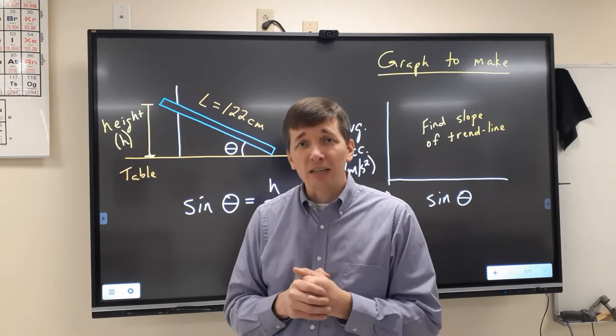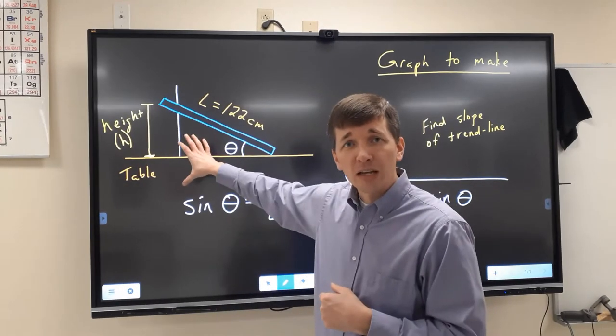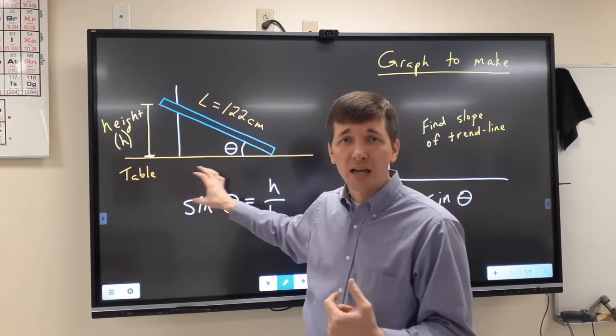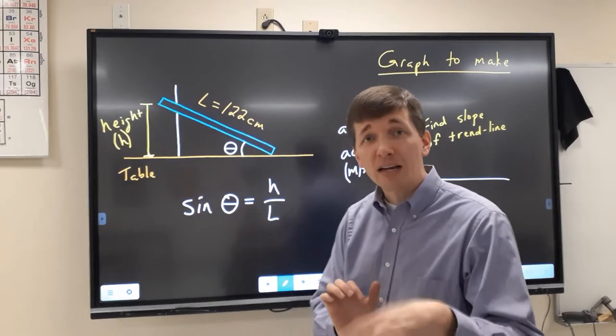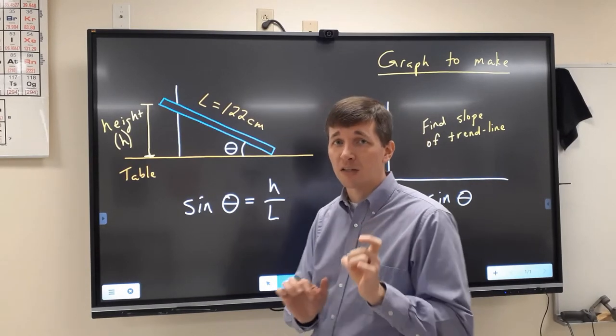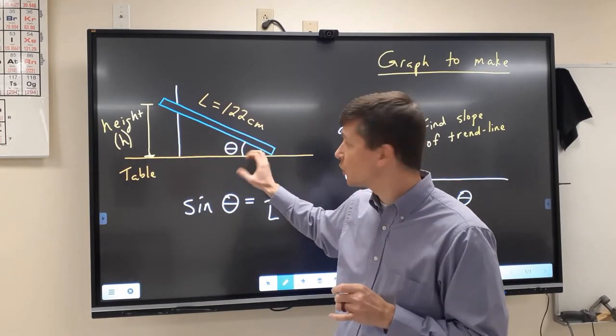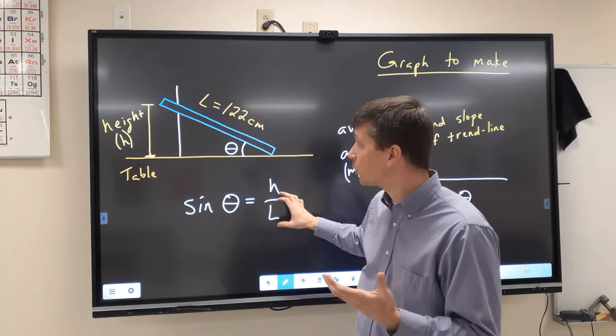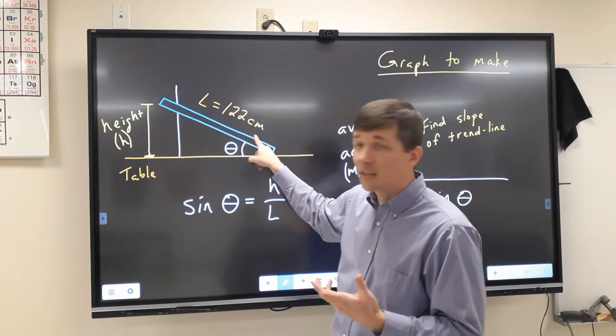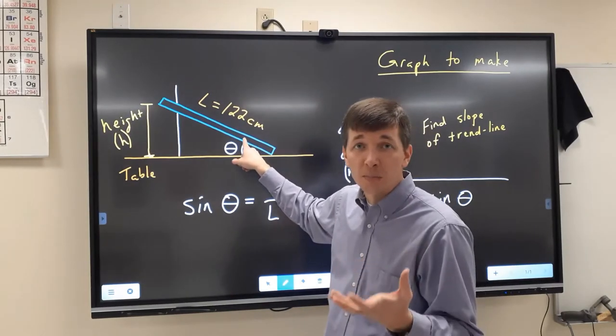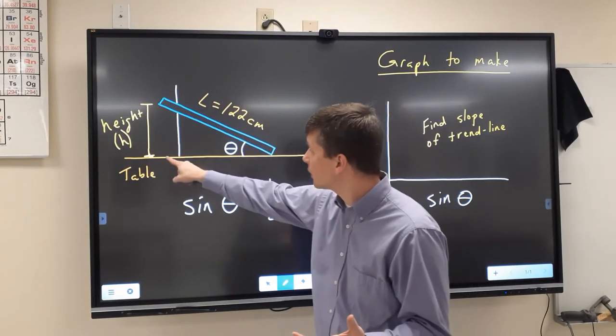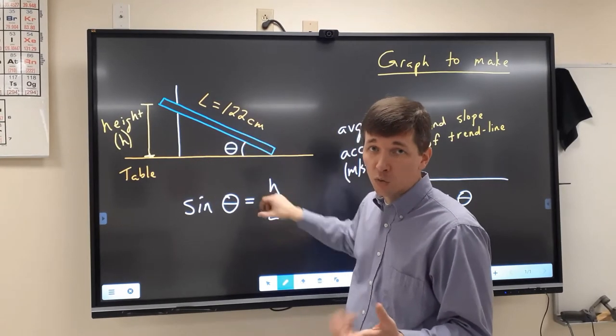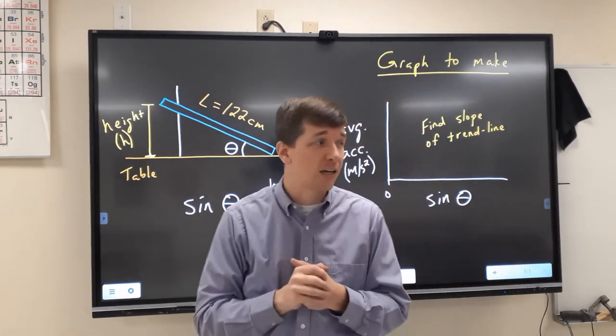Now, one of the things you're going to be calculating, I'm going to measure off those heights for you, I'm going to tell you the acceleration. You're going to need to calculate the sine of theta. You're not calculating theta itself, just the sine of theta. So you're going to take that height that we do in the experiment. You're going to divide it by the length of the ramp. Well, in every case, the ramp is 122 centimeters long. We're looking at this triangle that's being formed here with the tabletop. And that's the angle we're talking about. But you're calculating sine of that angle.